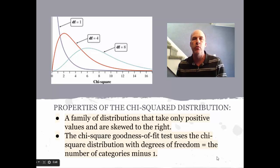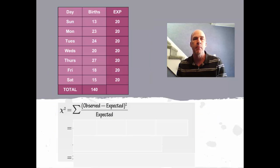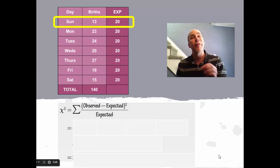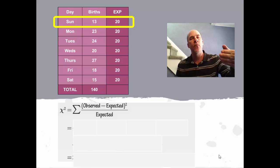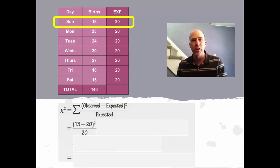Let's compute the chi-squared statistic. We're going to take all the observed and expected counts, subtract them from each other, square it, and divide by the expected. On Sunday we saw 13, but we would have expected 20 if they were equally likely throughout the week. That's a difference of seven, which we square to get 49, and put that over the expected, which is 20.